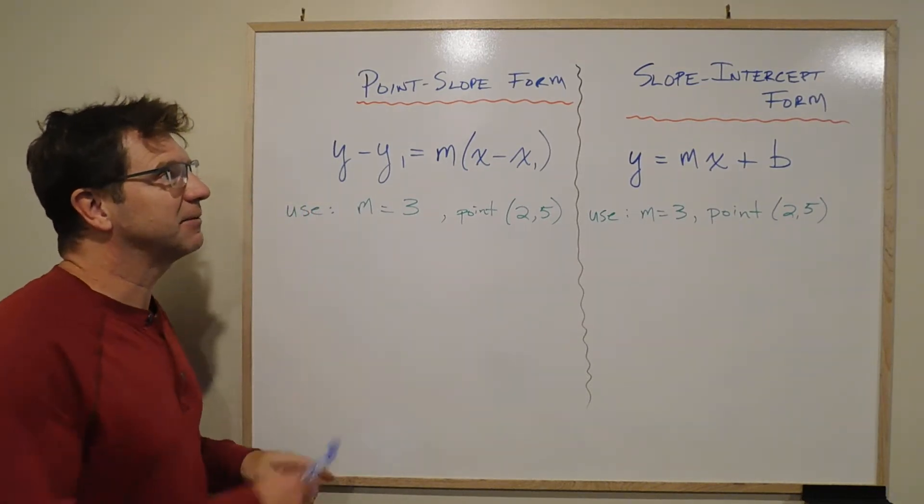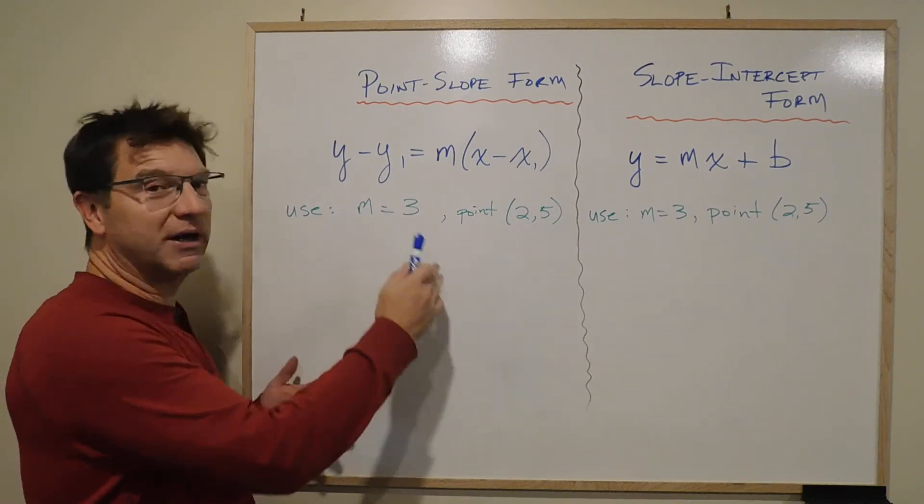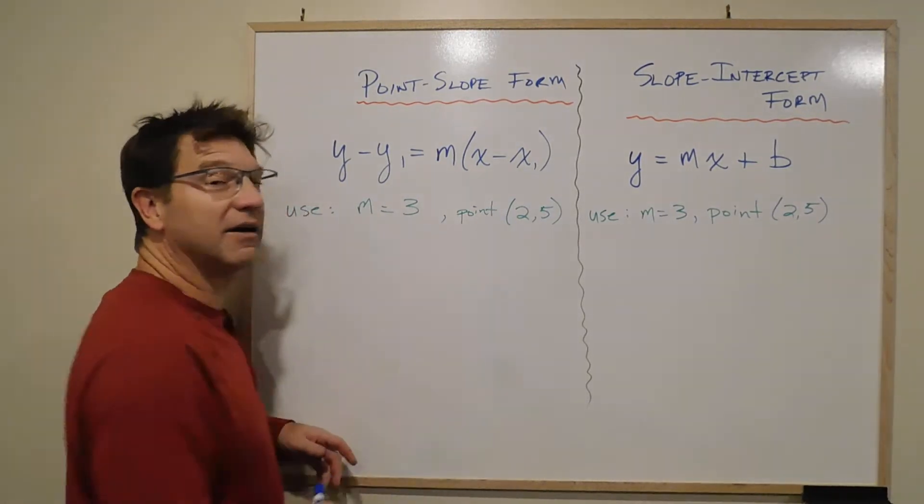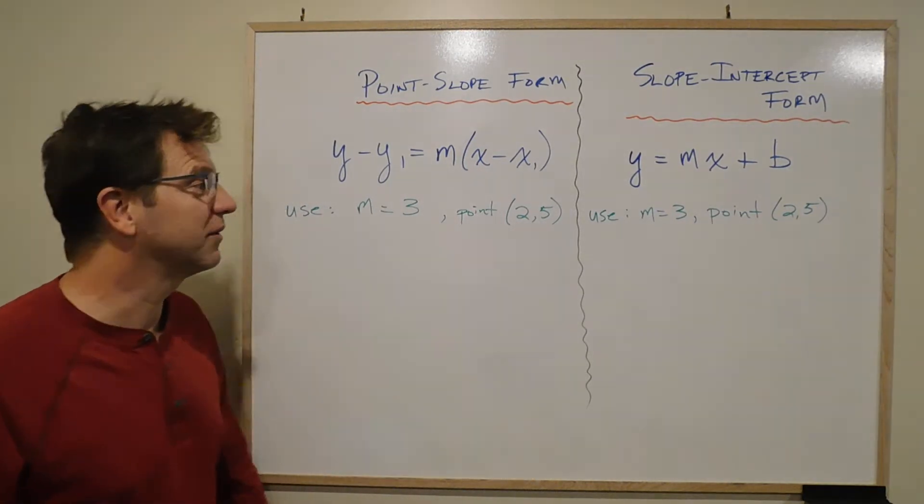So I'm going to do the exact same question with two of them, just to see what it's asking. I've chosen a slope of 3 and a point of 2, 5. Nothing too exciting. Remember, x is 2, y is 5 when we're doing this, right?